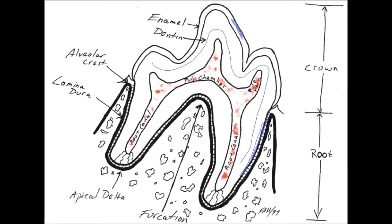Inside there is all the soft tissue. Normally the only way in or out of the pulp tissue or pulp chamber is through a collection of tiny little channels down at the tip of each root. The root tip is known as the apex, and because of the appearance of those little channels — like how a river enters into a lake — that area is known as the apical delta.